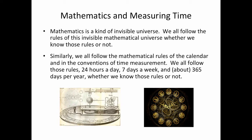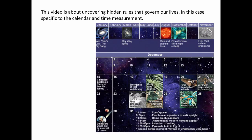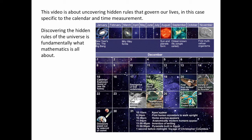So mathematics and measuring time. Mathematics is a kind of invisible universe. We all follow the rules of this invisible mathematical universe, whether we know those rules or not. And similarly, we all follow the mathematical rules of the calendar and the conventions of time measurement — 24 hours a day, 7 days a week, and about 365 days per year, whether we know those rules or not. This video is about uncovering hidden rules that govern our lives, specific to the calendar and time measurement. Discovering the hidden rules of the universe is fundamentally what mathematics is all about.